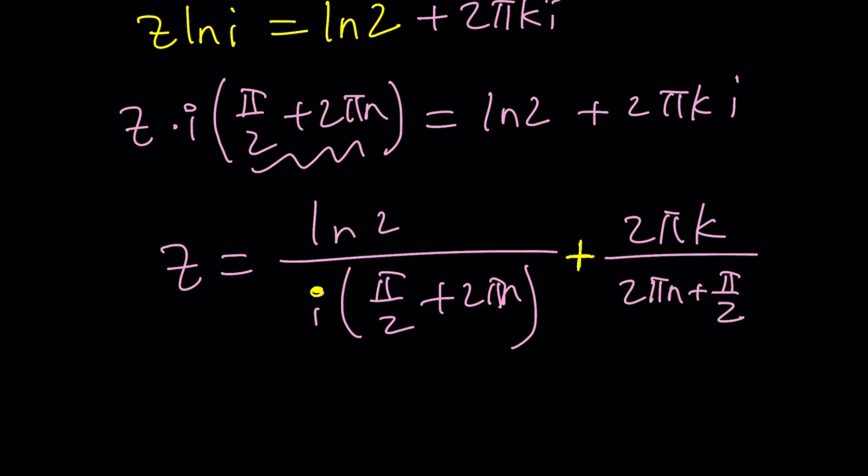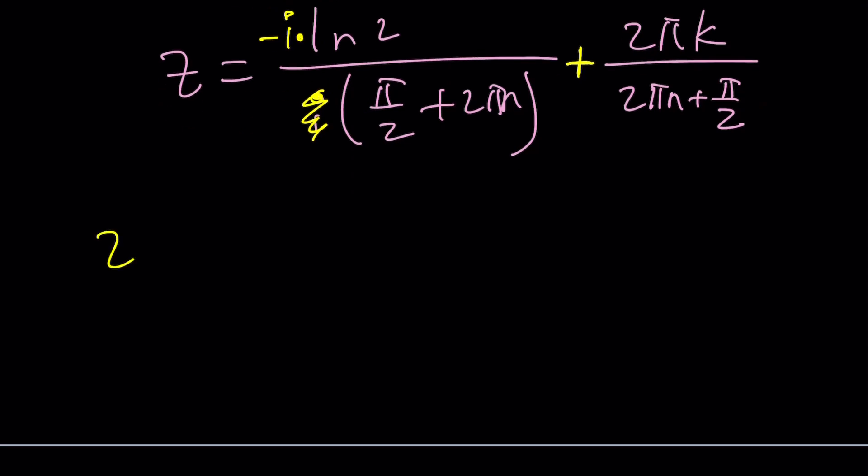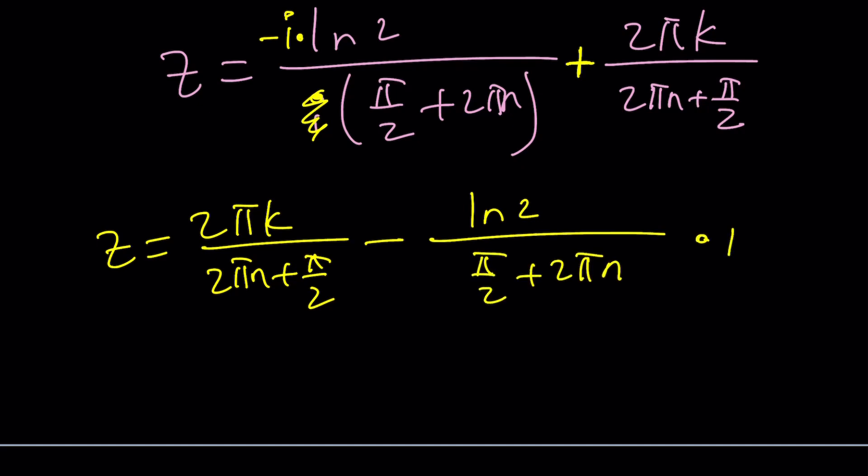So, this is going to be the imaginary part. But I still need to multiply by negative i. So, this will be negative i ln 2. In other words, Z can be written as 2πk divided by 2πn plus π over 2 plus or minus, minus ln 2 over π over 2 plus 2πn. I don't know why I reversed that. Multiply by i.